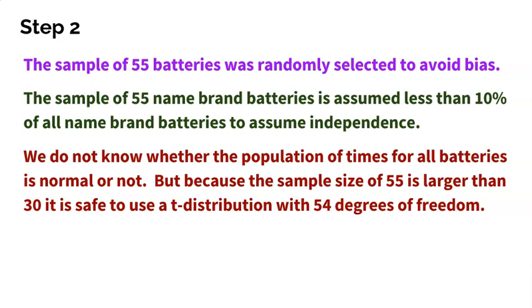So even though I don't know the population shape, I do know that my sample size is larger than 30 at 55. So a t-distribution with 54 degrees of freedom can be used. Now, if you haven't learned more about the t-distribution, I got some other videos that can help you. But basically, the t-distributions are based on what's called degrees of freedom, which is simply your sample size minus one when you're working with one sample.